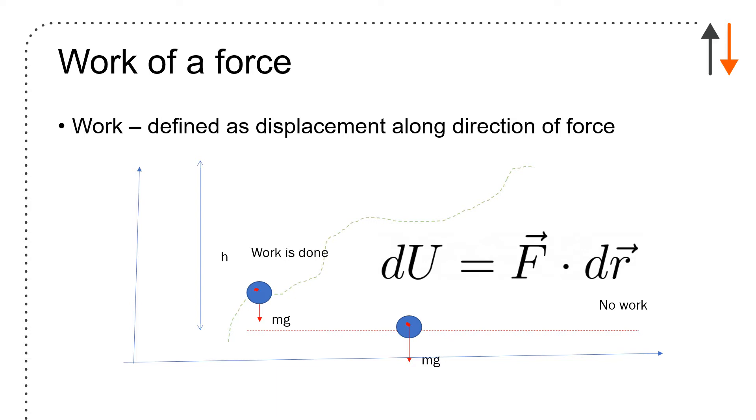It's set up as U, so dU equals the force dotted with dr. If the force and the direction are at 90 degrees with each other, they go to zero. These are vector quantities, but the result is a scalar.